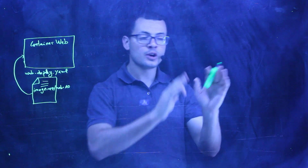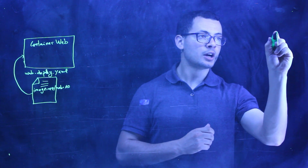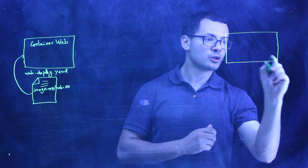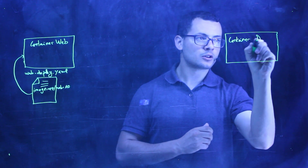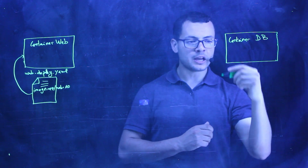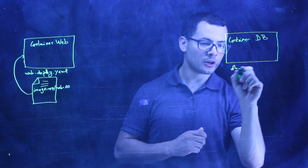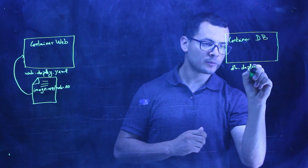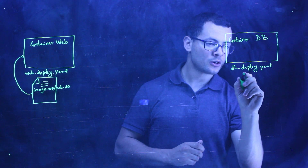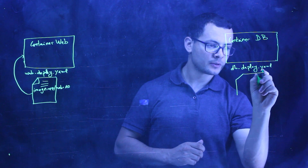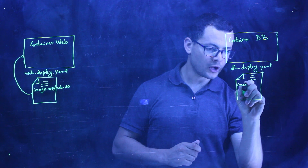Similarly, for the database side, we need to run a container to run the database. Let's call this container DB. This container DB has its configuration written into a YAML configuration file — just as we have web deploy.yaml, we'll have db deploy.yaml. This one, of course, describes the configuration for this container, including from where to get the image.